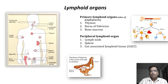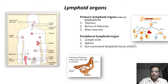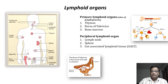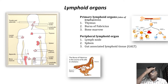Thymus and bone marrow are considered primary lymphoid organs because these are the sites of lymphopoiesis — meaning the lymph cells associated with the immune system are produced in these organs. The peripheral lymphoid organs include lymph nodes situated in different parts of the body, spleen, gut-associated lymphoid tissue, mucosa-associated lymphoid tissue, etc. These are considered peripheral because lymph cells are not synthesized there; instead, immune cells migrate from primary organs to secondary organs where they get matured or activated.